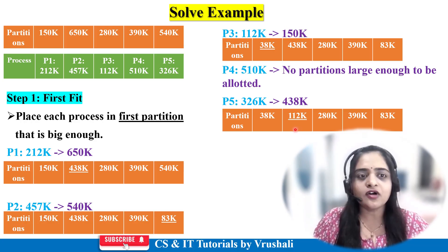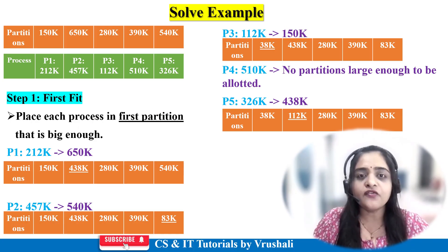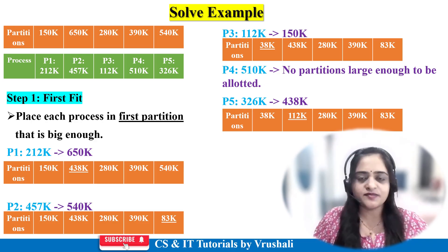This is the first fit allocation strategy: find the first partition that is big enough and start searching from the first partition.